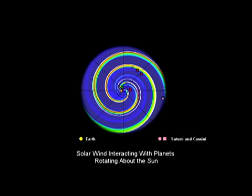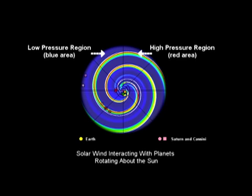it interacts with the Earth, Saturn, and all the planets of the solar system. High-speed solar wind runs into slower wind in front of it, forming regions of alternating high-pressure, colored red, and low-pressure, colored blue. The direction of the magnetic field reverses sign near the high-pressure regions.